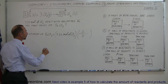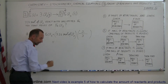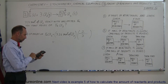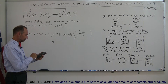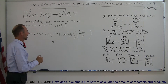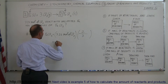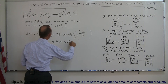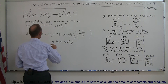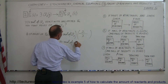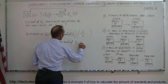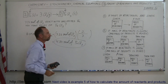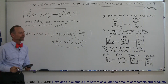So I multiply 7.26 times two divided by three, and I end up with 4.84 moles of ferric chloride. That's the answer — that's how you do that.